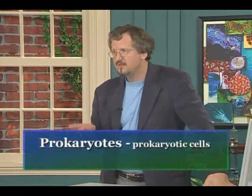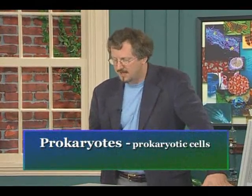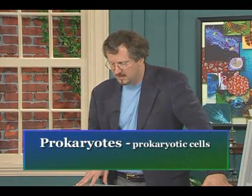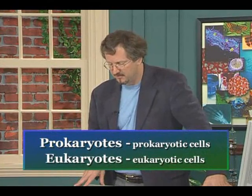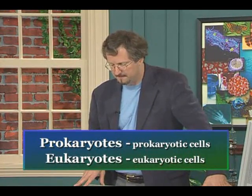In living things, there are fundamentally two different kinds of cells. Everything that's alive is made of one kind of cell or another, and I just want to give you some background about this. We call these two types of cells prokaryotes or prokaryotic cells, and eukaryotes or eukaryotic cells, respectively.